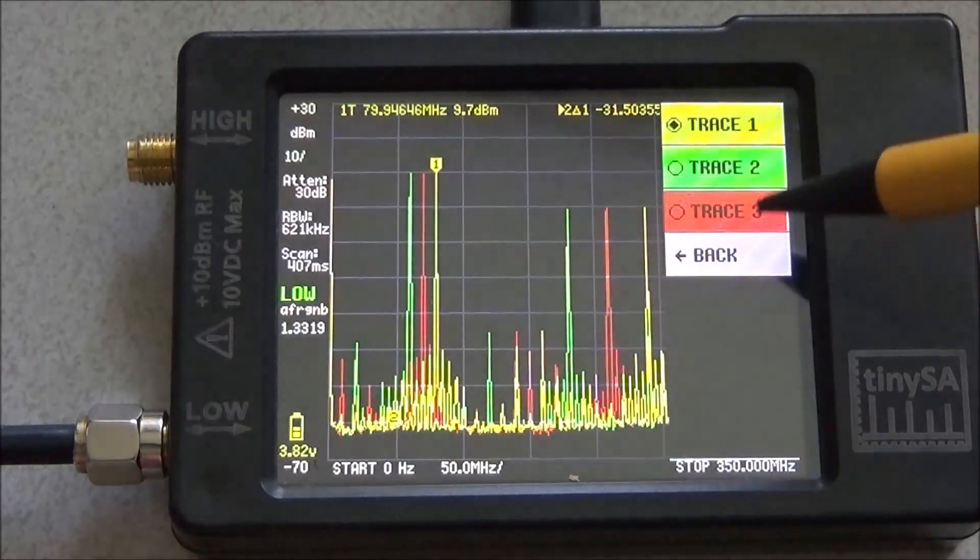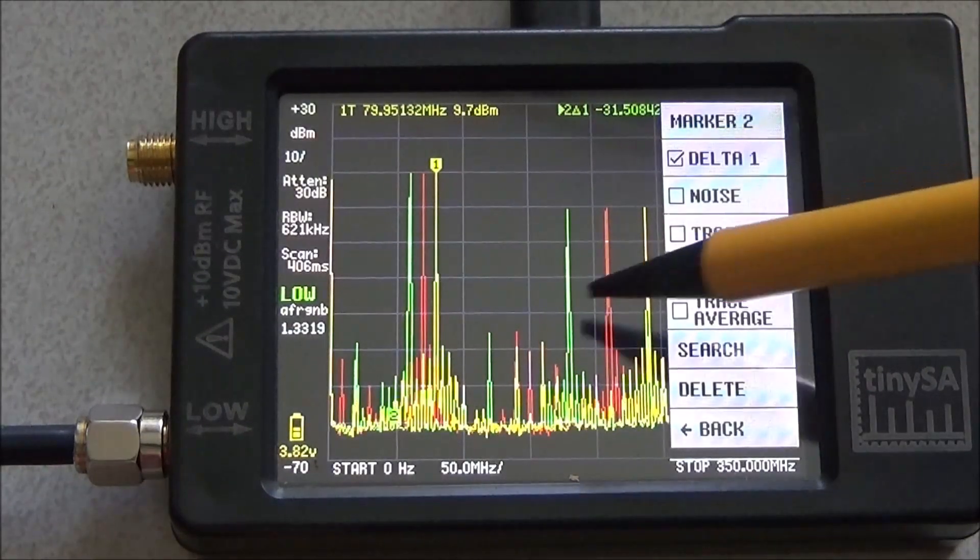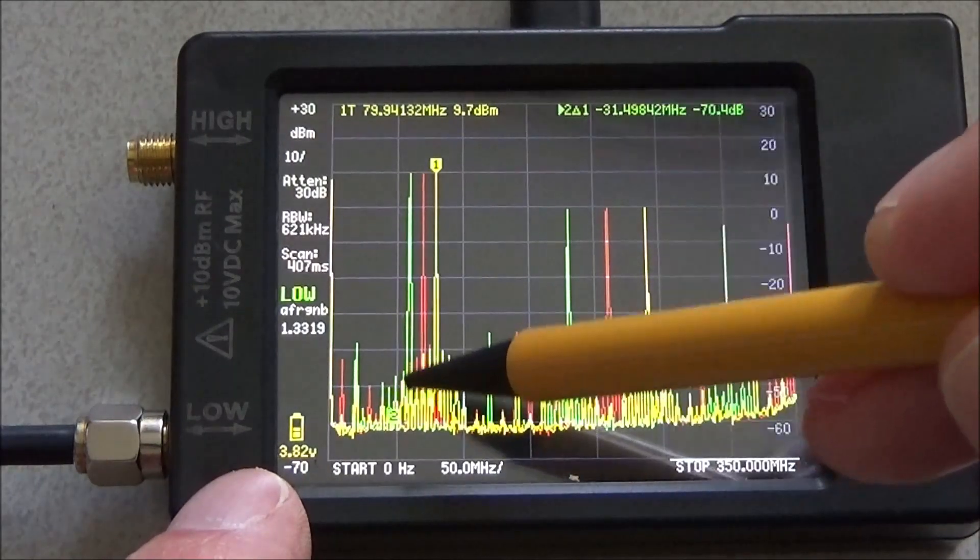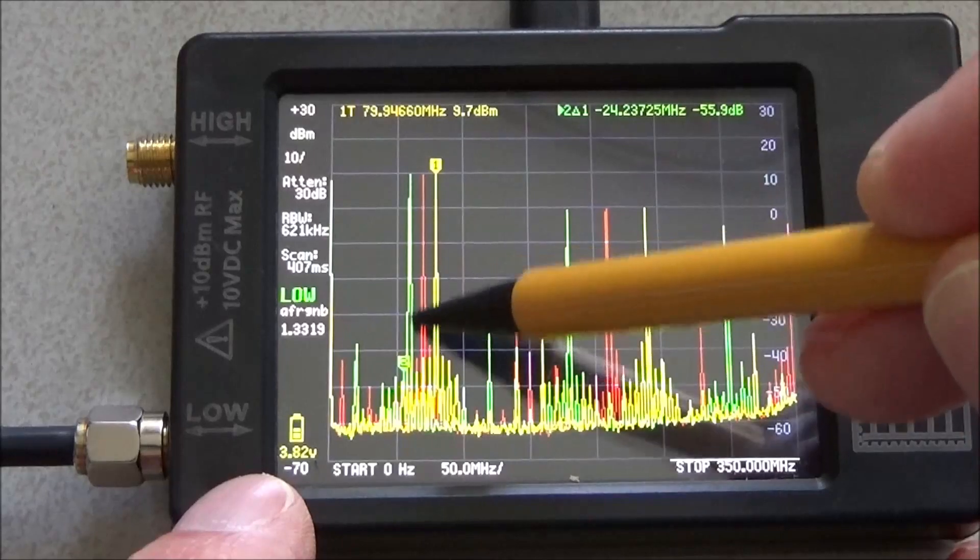But I can also put marker 2 on another trace. For instance I put it on trace 2. You see the color has changed of the marker, and as it's now on trace 2.